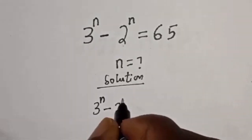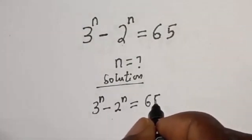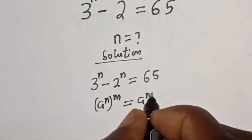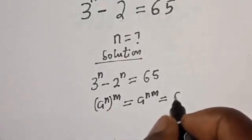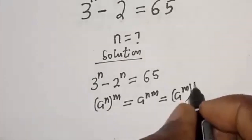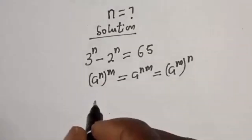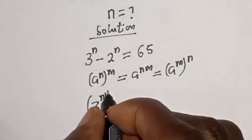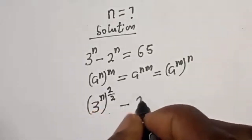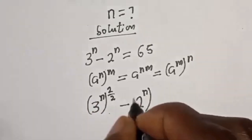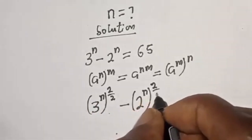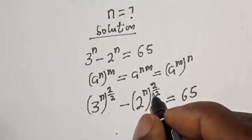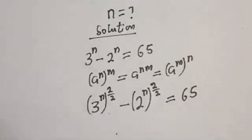We have 3 raised to power n minus 2 raised to power n is equal to 65. Let's add a trick here: we rewrite this as 3 raised to power n times (2/2), minus 2 raised to power n times (2/2), all equal to 65. This does not change the exponent because 2 divided by 2 gives you 1.